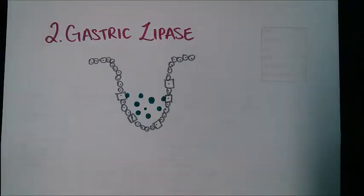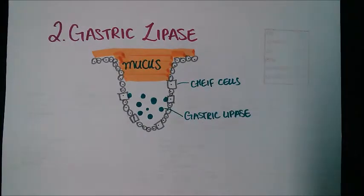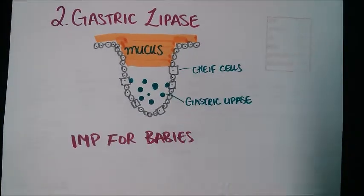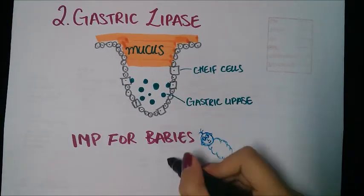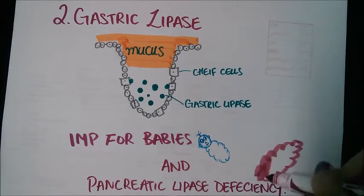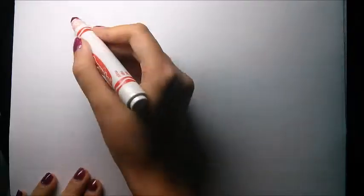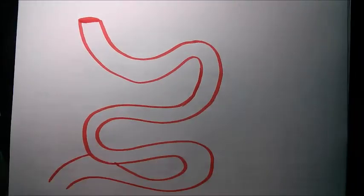Gastric lipase is produced by the chief cells in the mucus lining of the stomach. It is involved in the breakdown of fats and oils. It is especially important for babies as it helps emulsify fats in milk.